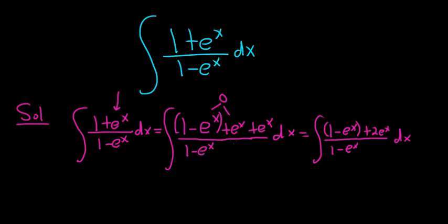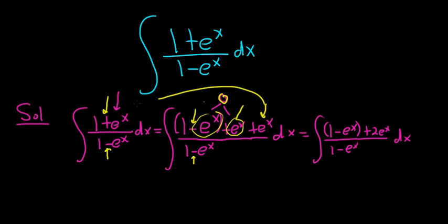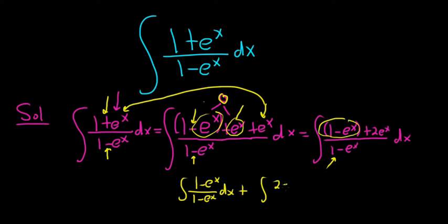Let's pause and go over that step again because this is a very key technique. We have (1 + eˣ) / (1 − eˣ). The goal is to have (1 − eˣ) / (1 − eˣ), so we write that down. But you can't just put a −eˣ there — you have to take it away. These cancel, you get 0, and eˣ plus eˣ is 2eˣ. So by breaking it up: the integral of (1 − eˣ) / (1 − eˣ) dx, plus the integral of 2eˣ / (1 − eˣ) dx.